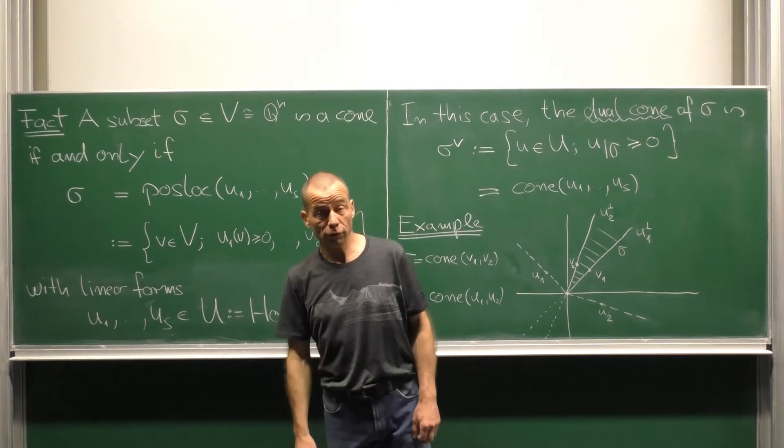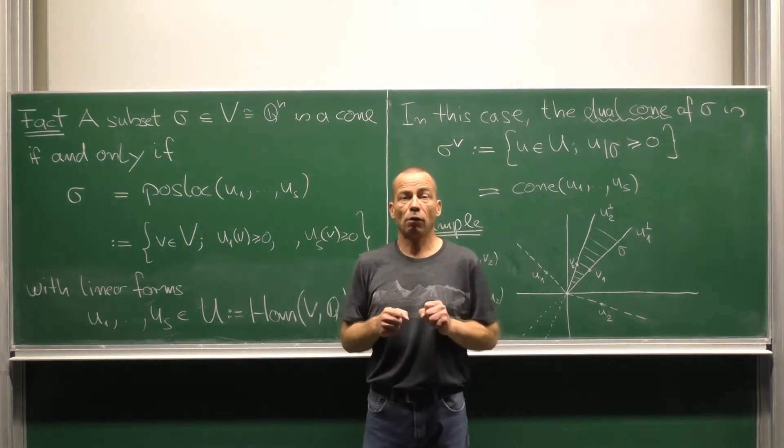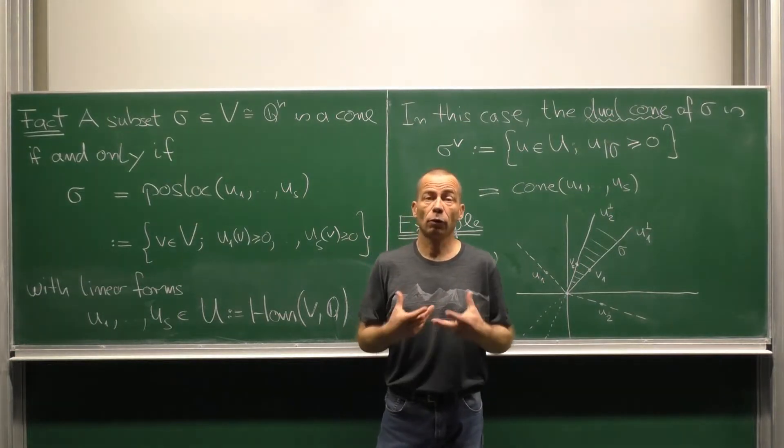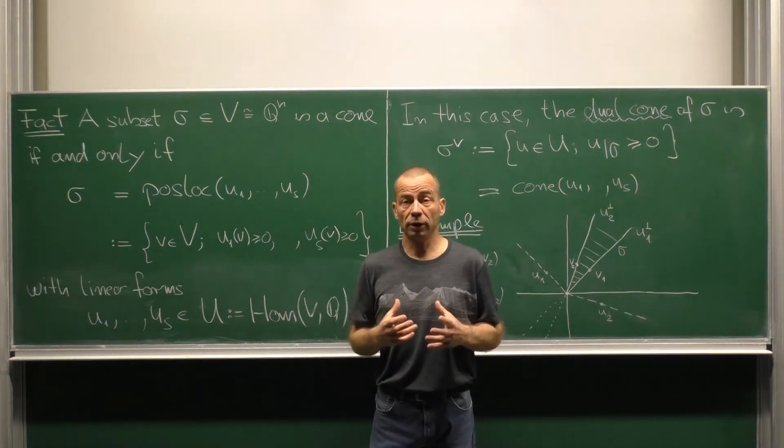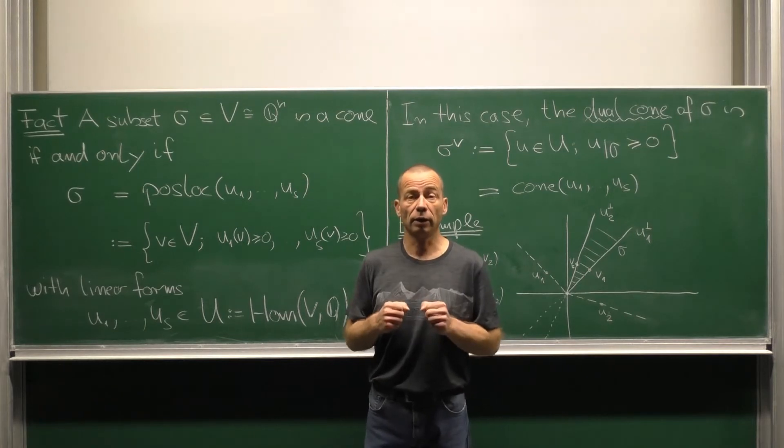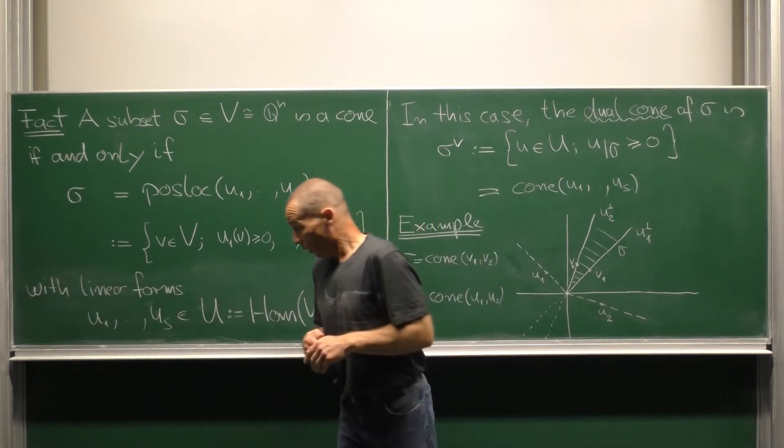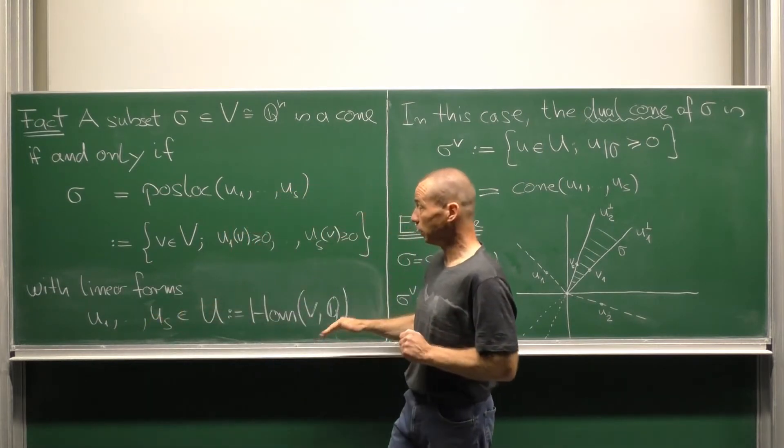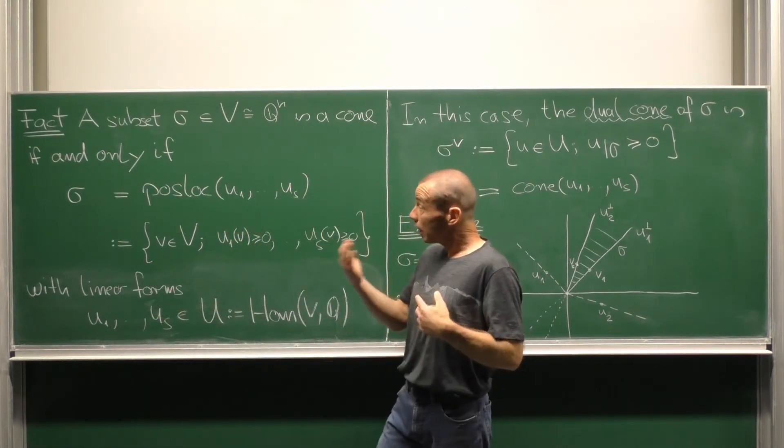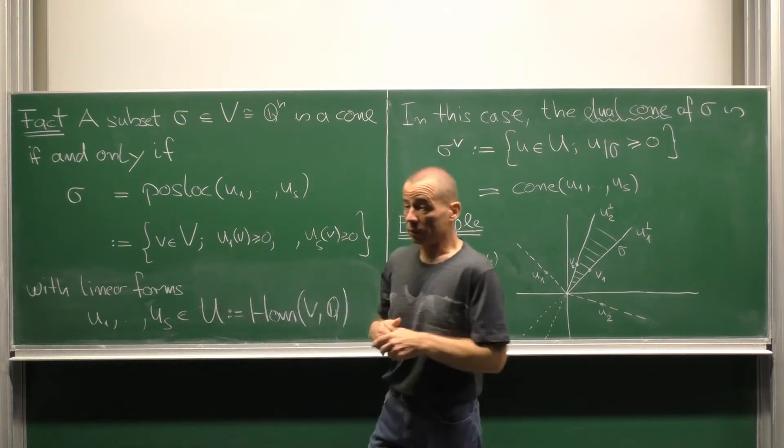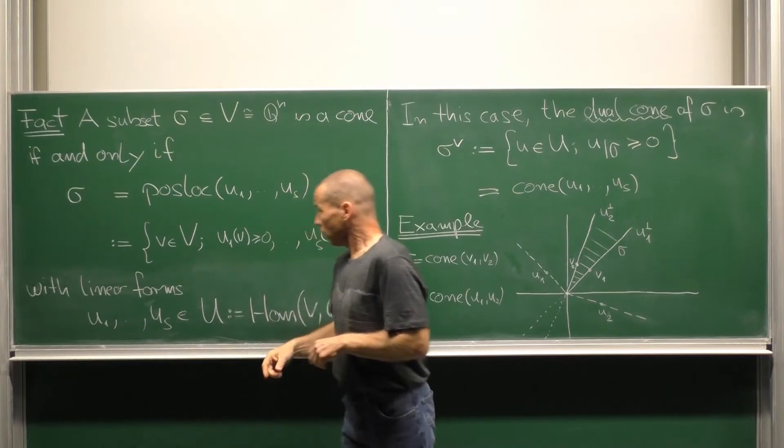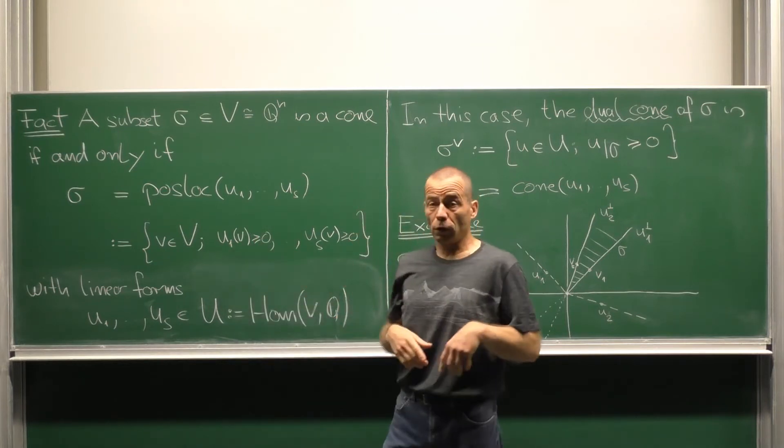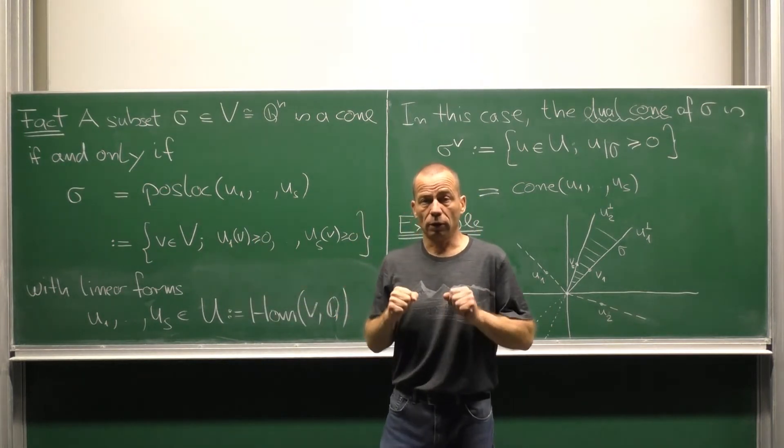Here is an important fact. A subset sigma of a finitely generated rational vector space is a cone in our sense if and only if we can describe it by means of finitely many linear forms. Concretely that means that there are linear forms u1 up to us in the dual space such that our sigma consists precisely of the vectors v on which all the linear forms evaluate non-negatively.